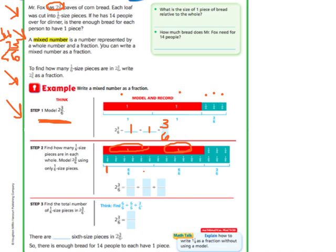So one, two, three, four, five, six. That represents one whole right there. And then one, two, three, four, five, six would represent the second whole.